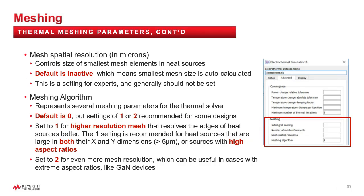The best setting — and I'd say saved for last — is the meshing algorithm. It actually controls several internals of the HeatWave solver and really is a great balance between accuracy and speed. We have three settings: zero, one, and two. Zero is the default and favors speed over accuracy, but is still very reasonable. Setting one gives higher mesh resolution around the edges of heat sources. Setting two is the newest and I've found very useful for GaN devices with very extreme aspect ratios — like gates that are hundreds of microns long but just a fraction of a micron wide.